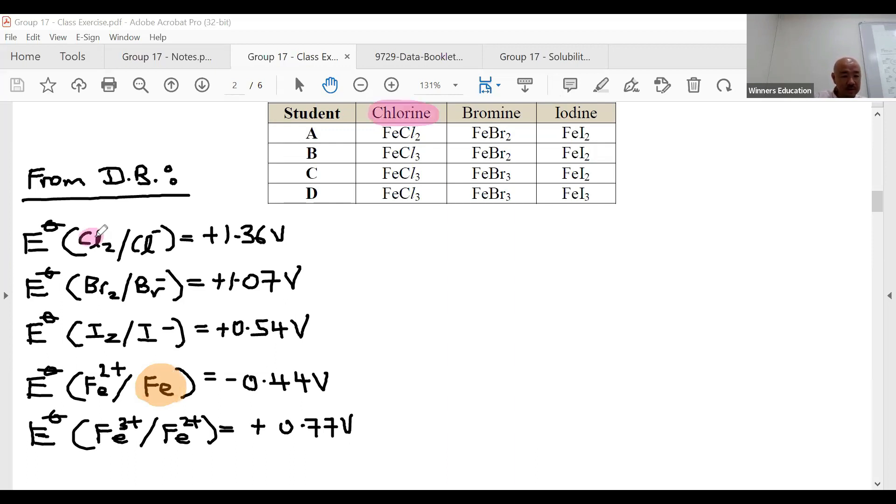Let it react with chlorine. They're on opposite sides—one wants to get oxidized, one wants to get reduced. A redox reaction is possible, so we need to calculate the E° cell value to check its feasibility. E° cell equals E°R minus E°O.